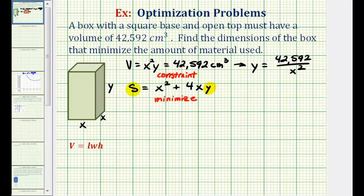So we can replace y in the surface area formula with this quotient. So we'd have S equals x squared plus four x times this quotient here, 42,592 divided by x squared. Let's go ahead and simplify this.